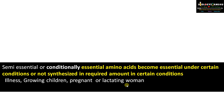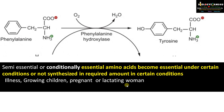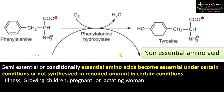Let's take an example to understand the concept. Take the case of tyrosine. Tyrosine is a non-essential amino acid. It is synthesized from the amino acid phenylalanine. Tyrosine is similar to phenylalanine — it just has an additional hydroxyl group — and the enzyme involved is phenylalanine hydroxylase.